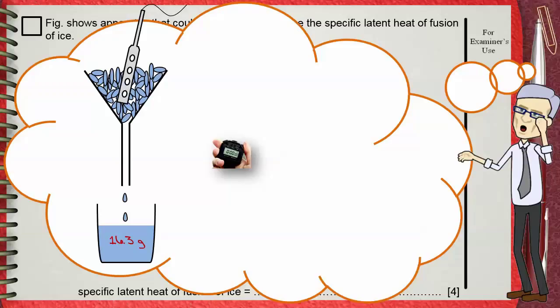In this experiment, ice got heat from 2 sources. The first source is the heater itself. Ice also gains heat from surround. So, the 16.3 grams are not only due to heat coming from the heater, but also some heat coming from the surround.